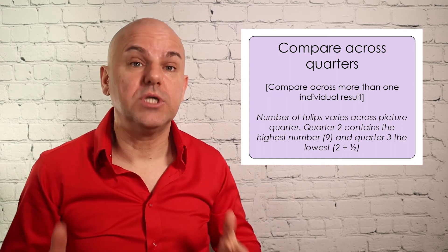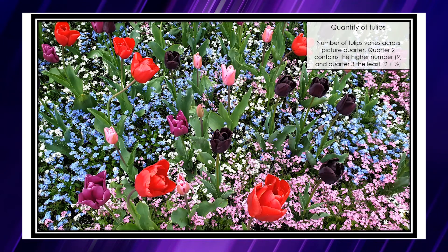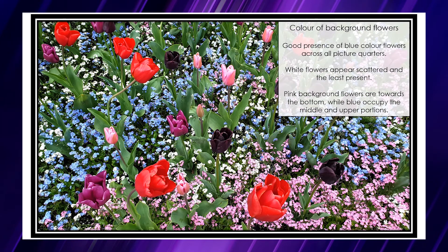Comparing across individual results: with regards to the quantity of tulips, we could say that the number varies across picture quarters, with quarter two containing the highest number with nine tulips, and quarter three the least with about two and a half. With regards to the color of background flowers, there is good presence of blue-colored flowers across all quarters. White flowers appear scattered and least present, and pink background flowers are located towards the bottom, while blue occupies the middle and upper portions of the flower patch.